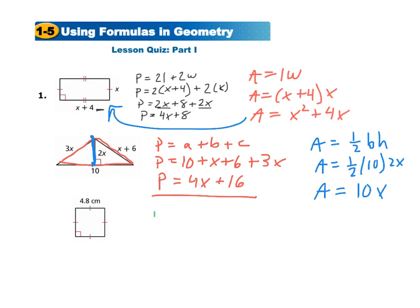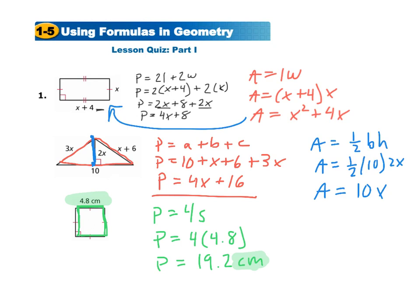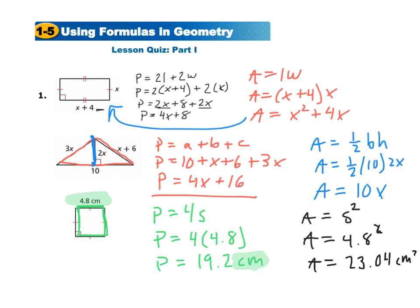Now for the square with side 4.8 centimeters: the perimeter is 4S, so 4 times 4.8 equals 19.2 centimeters — make sure to include centimeters. The area is S squared, so 4.8 squared equals 23.04 centimeters squared, since we're talking about area.